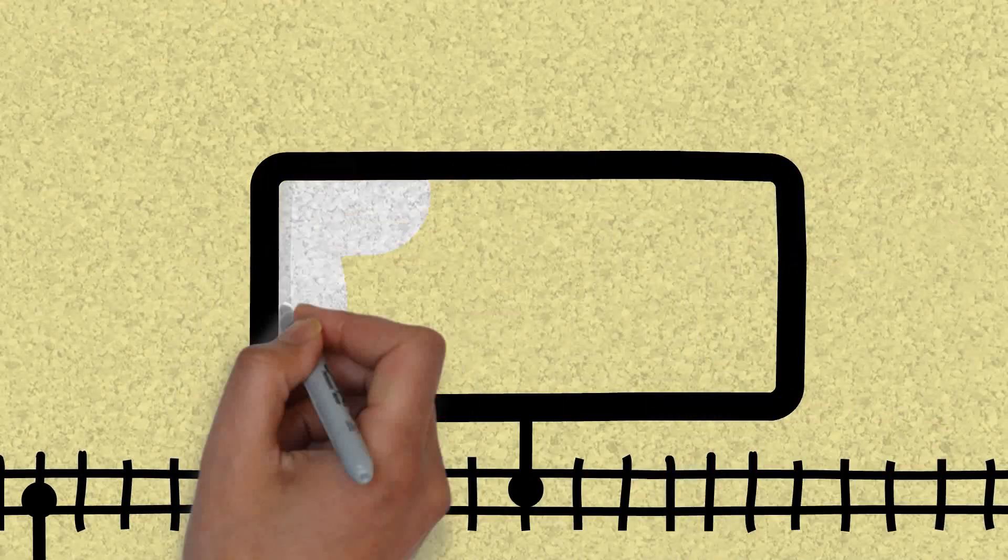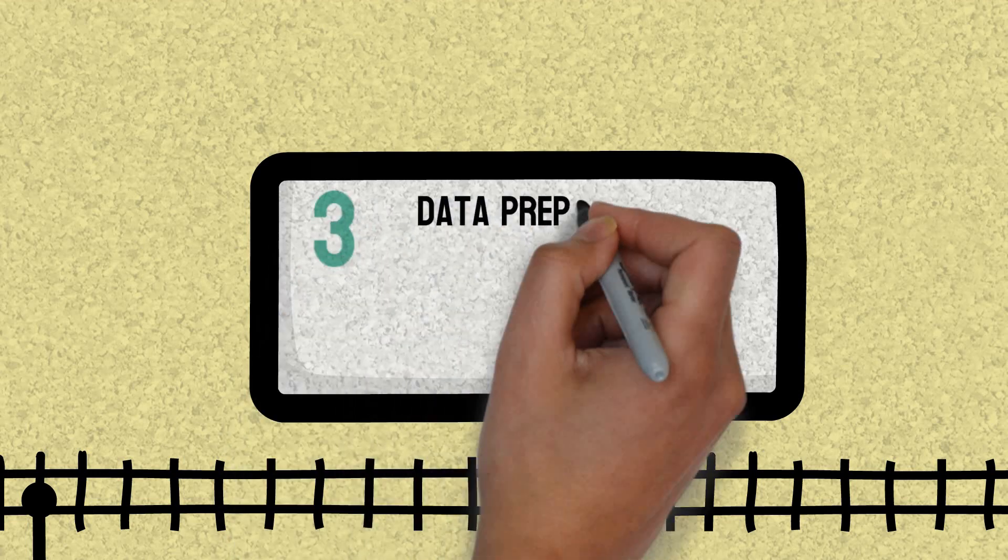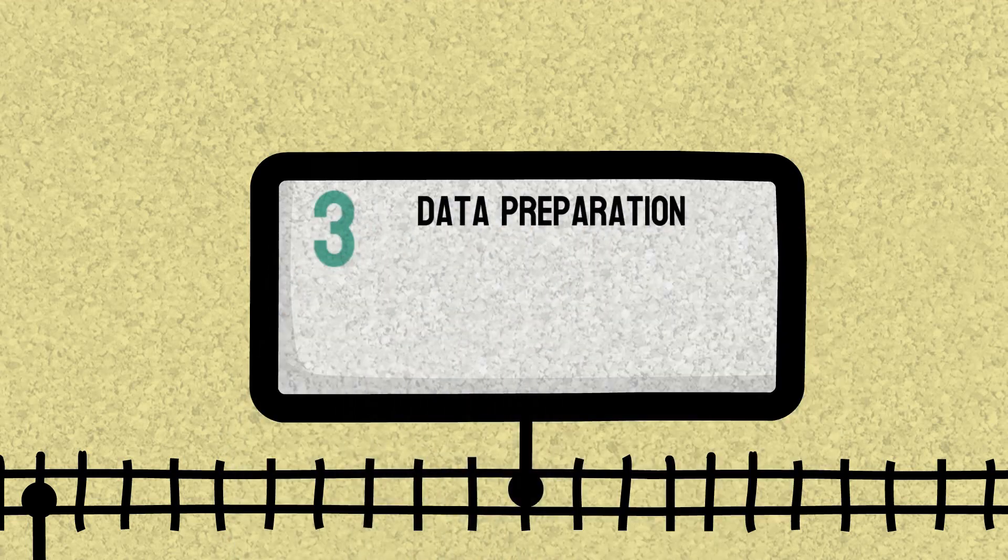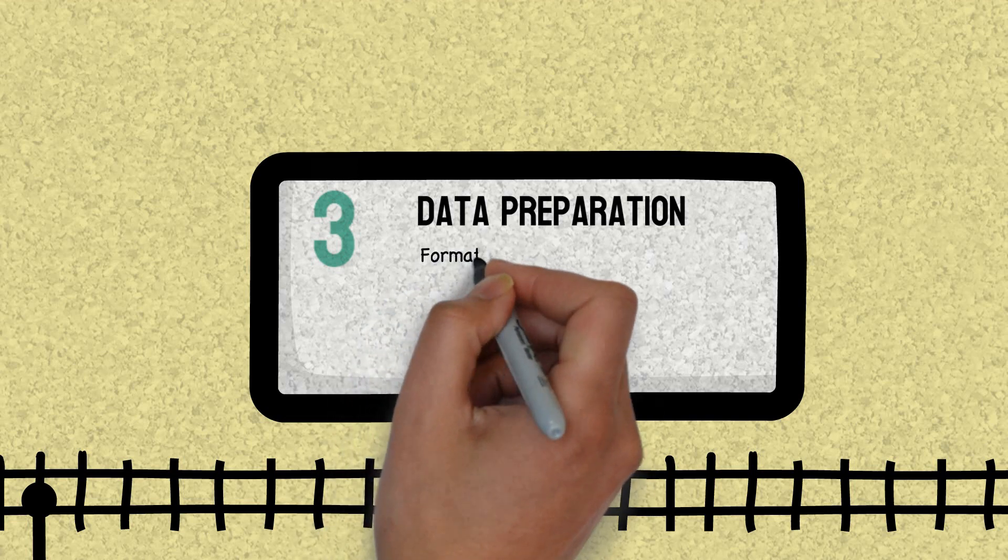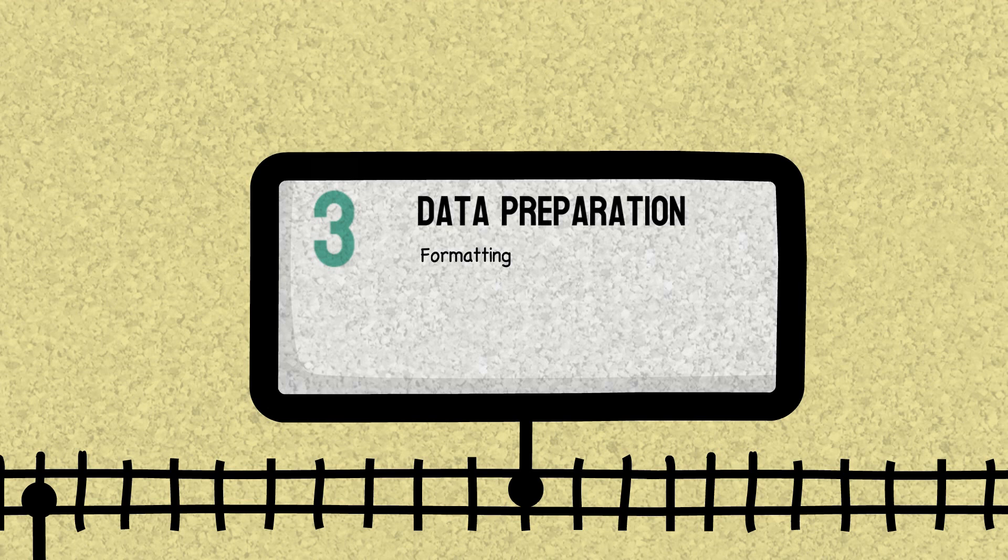Once we have collected the data then we need to clean it as raw data is generally dirty or unstructured in nature and cannot be fed into the system directly. So there are some steps involved in pre-processing and formatting the data. Like if we talk about Apache Impala, it does not support ORC format. Sometimes due to memory constraint we need to format our data.